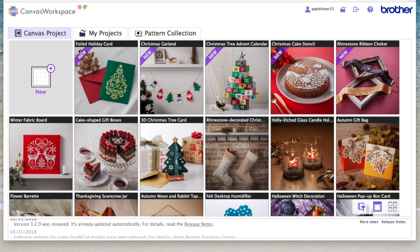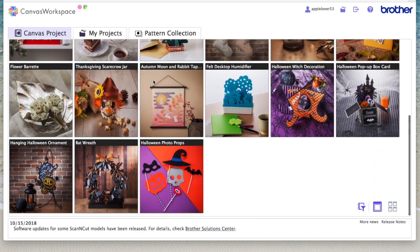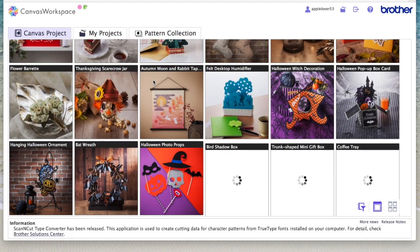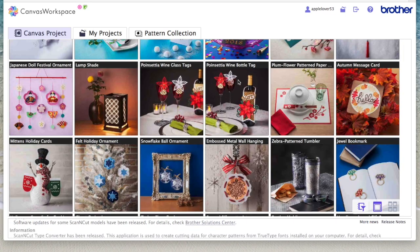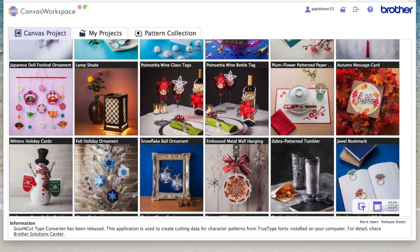Now I'm in Scan and Cut Canvas and I'm on the canvas projects tab. I'm going to scroll down until I find the file that I want. This is the project that I want to open, it's the poinsettia wine bottle tag.